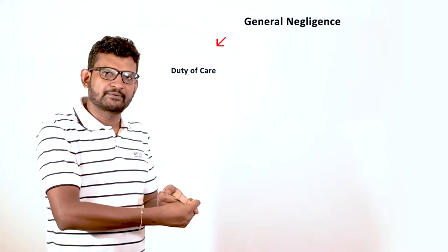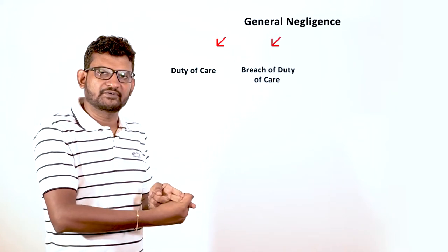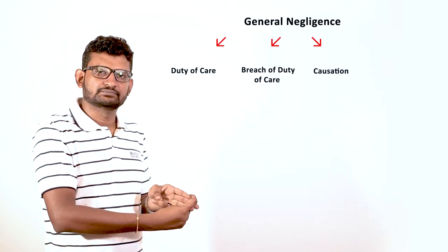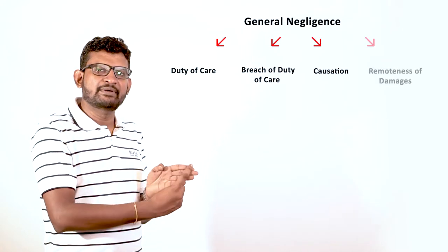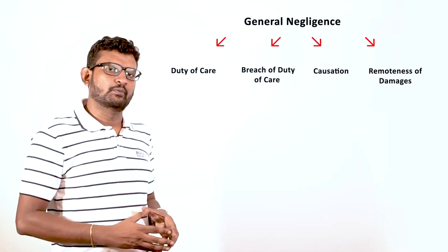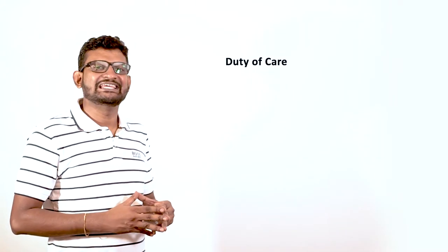When you look at tort, the biggest part of your tort syllabus would be general negligence. There are four parts to general negligence: duty of care, breach of duty of care, causation, and damages not being too remote.